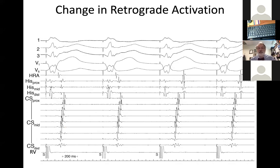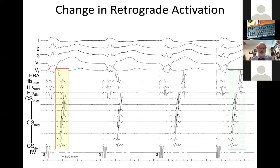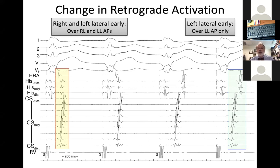Another patient shows a dramatic change in retrograde atrial activation—a kind of reverse concentric pattern where the AVJ and proximal CS are the last, not the first, to be activated. The high right atrium and lateral CS activate first. This patient had pre-excitation and retrograde conduction on the right side, plus a concealed left-sided pathway. At certain complexes both pathways are fused, and at others only the left-sided pathway conducts.